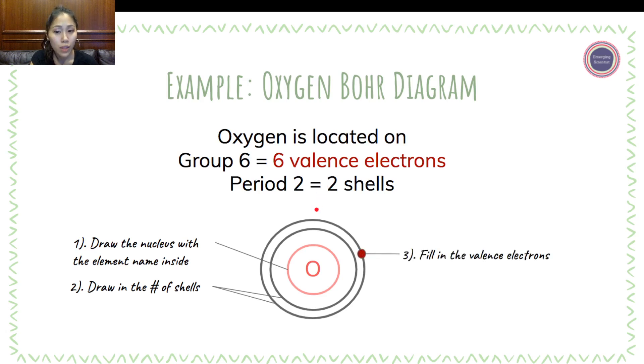Third, fill in the valence electrons. We know oxygen is found in group 6, which means that it has six valence electrons. So we can draw six electrons now. One, two, three, four, five, six.